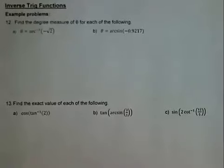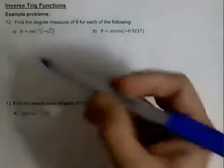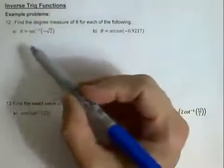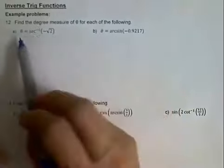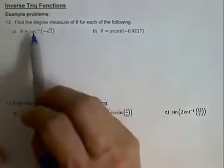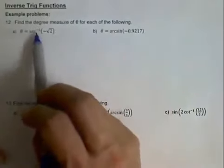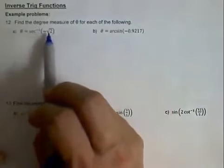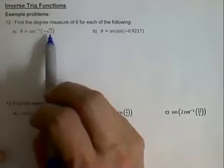Now we're going to work with our inverse trig functions. In number 12a, we've got theta equals the inverse secant of negative square root of 2.